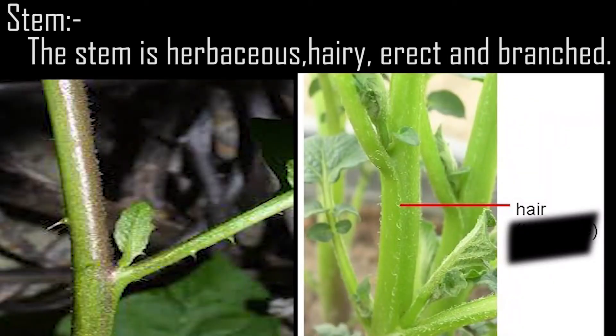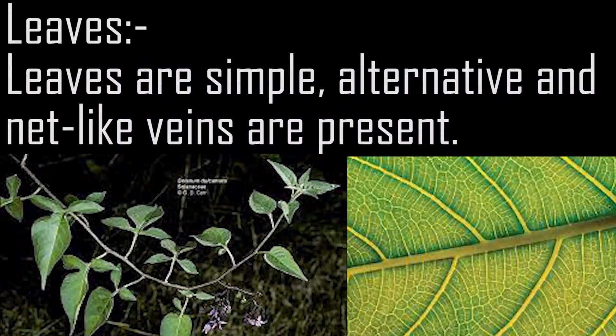Stem: The stem is herbaceous, hairy, erect and branched. Leaves: Leaves are simple, alternate, and net-like veins are present.